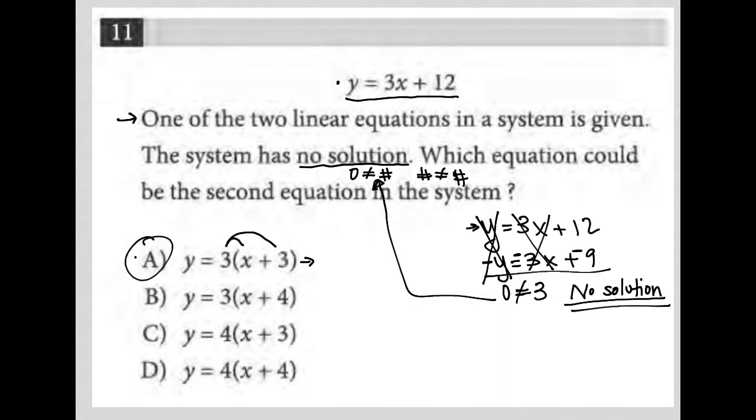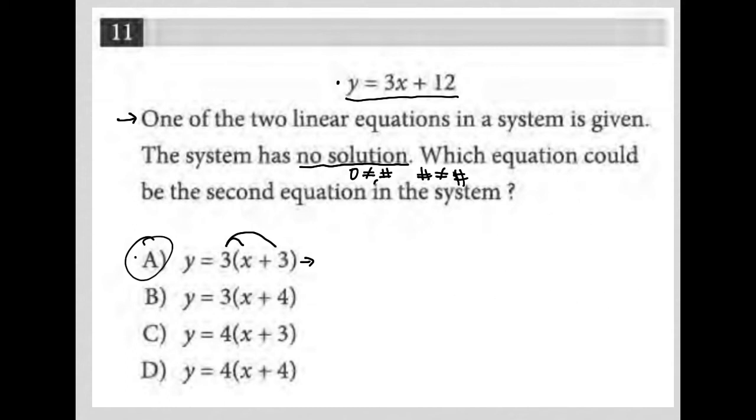Let me show you what happens if I were to try choice B. Again, I distribute the 3 across. I end up with y equals 3x plus 12. Notice that that is exactly the same as the original equation in the system that was provided. We use elimination here, and the y's are gone, the x's are gone, but also the 12 is gone. So I end up with 0 equals 0.